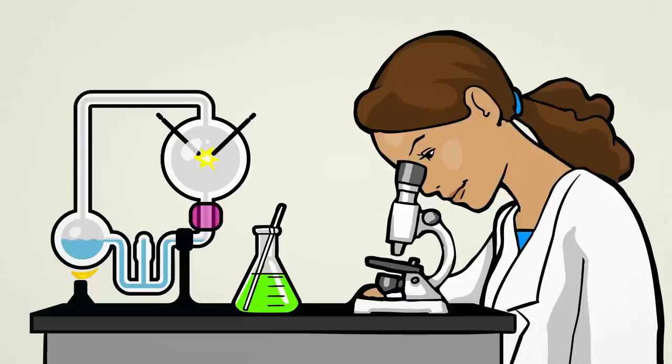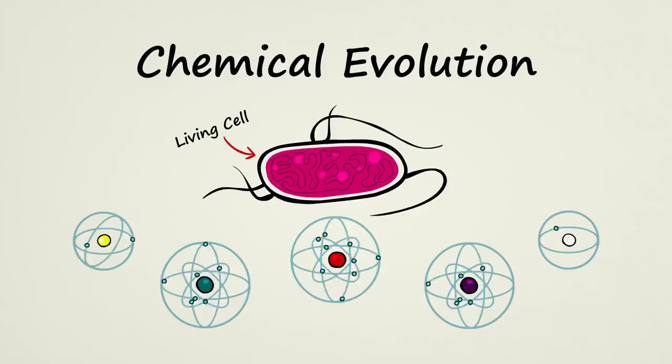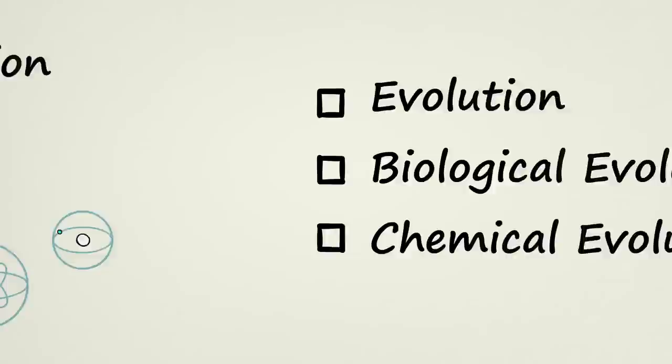Scientists have reason to think that the first living cells on Earth came about through a natural process called chemical evolution. What is chemical evolution? How does it work? And how is it different from biological evolution?